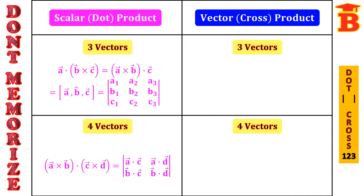This formula we can write very easily. Just take the first vector, multiply and write it in the first row: A·C and A·D. Next, take the second vector, multiply and write it in the second row: B·C and B·D. That is the dot product of 3 and 4 vectors.